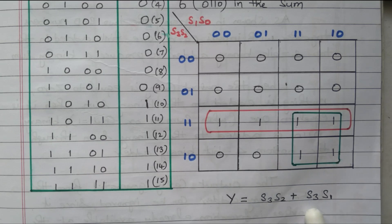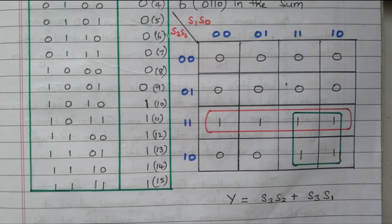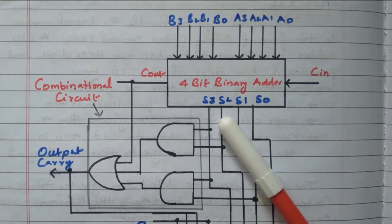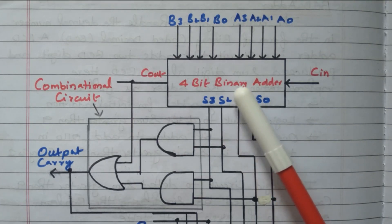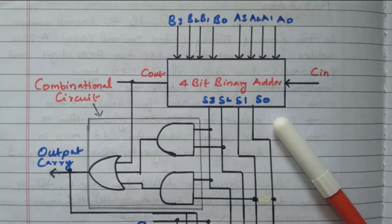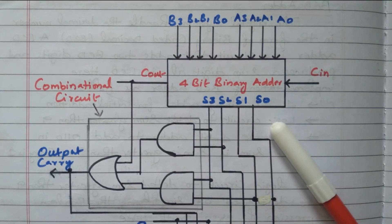So the output Y — the circuit to detect whether the final answer is greater than nine or less than nine — is Y = S3·S2 + S3·S1. We need to implement this logic circuit in order to detect whether the final answer is greater than nine or less than nine. Now, we will see the BCD adder and how to perform the BCD addition. We have the expression for Y to detect whether the output is greater than nine or less than nine.